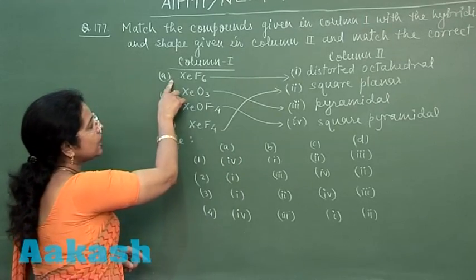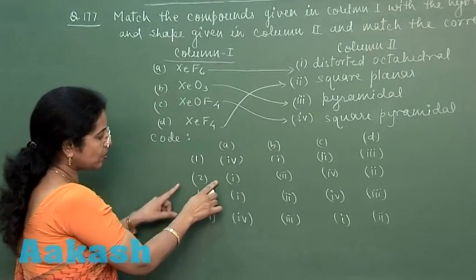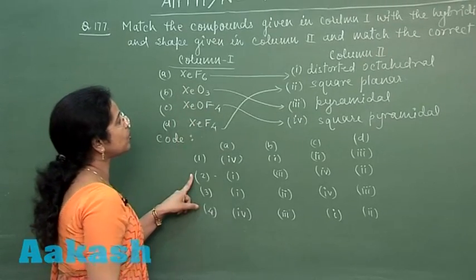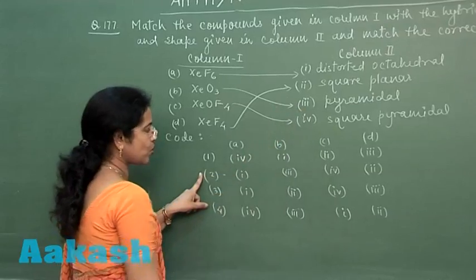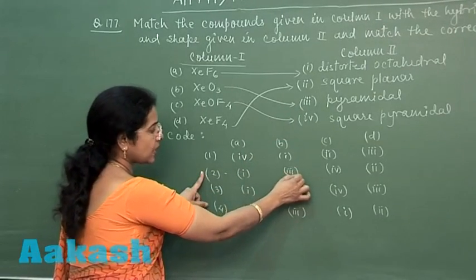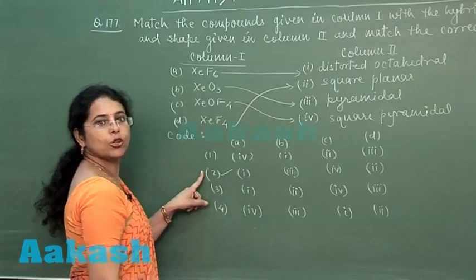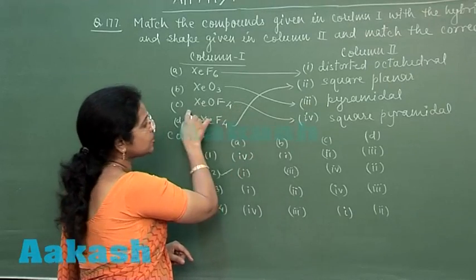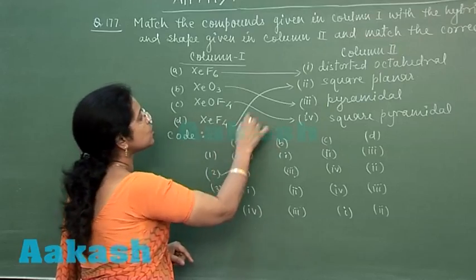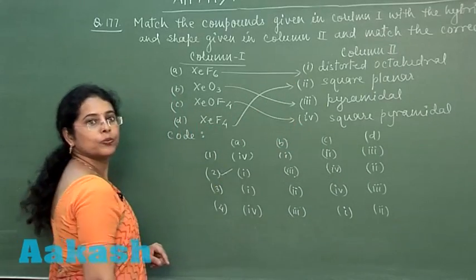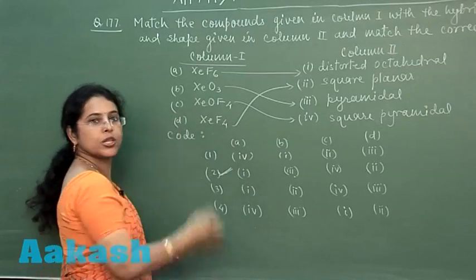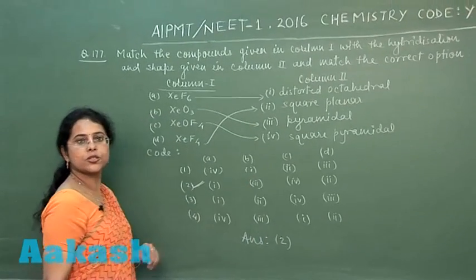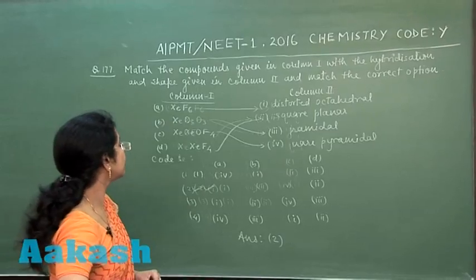Now matching the correct option: A should be matched with 1, suggesting the second or third option may be correct. For B, xenon trioxide (XeO₃) should be matched with 3. For C, xenon oxytetrafluoride should be matched with 4, and D should be matched with 2. Therefore, the correct answer to question 177 is the second option.